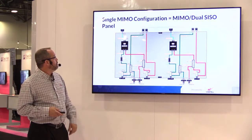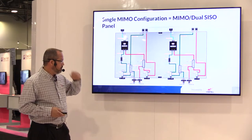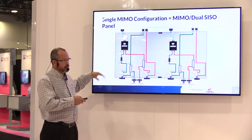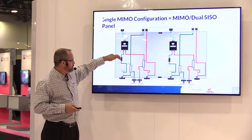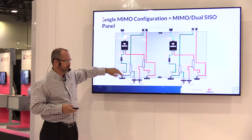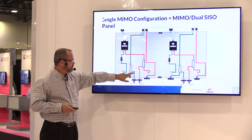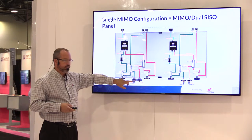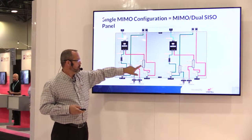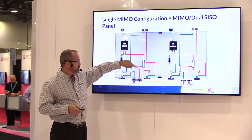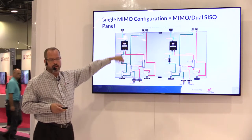This is a block diagram of a single MIMO sector or two SISO sectors. This is your duplex or fixed attenuator, variable attenuator. This is your downlink path, a directional coupler with an output for a test port. And then on your uplink path, you've got that same directional coupler for your test port, a variable attenuator, and your output back to the BTS.